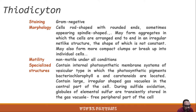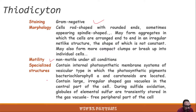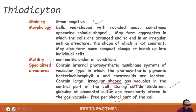Thiodictyon is gram-negative, sometimes spindle-shaped, and may form aggregates with cells arranged end-to-end in irregular net-like structures. They are non-motile under all conditions and contain similar structures normally found in photosynthetic bacteria. They contain large, irregular-shaped gas vacuoles in the central part, which are not found in all photosynthetic bacteria.